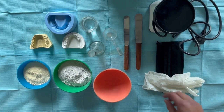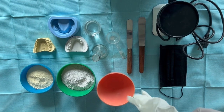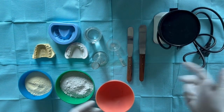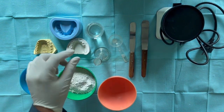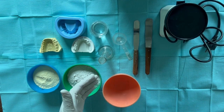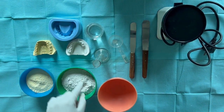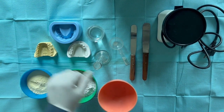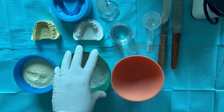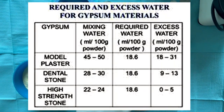Before mixing, I will wear gloves and face mask. In the mixing of soft plaster, we will add water first into the rubber bowl, then add the powder into the water to minimize the chances of air bubbles. I will take 100 grams of soft plaster to fill this mold. For 100 grams of soft plaster, I will take 50 ml of water.